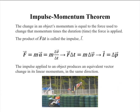We call that change in an object's momentum the impulse-momentum theorem. The change in an object's momentum is equal to the force used to change that momentum. The F·ΔT is called the impulse, and we use the letter I for impulse. So the impulse F·ΔT equals the change in momentum. Please note that the change in linear momentum is considered to be in the same direction.